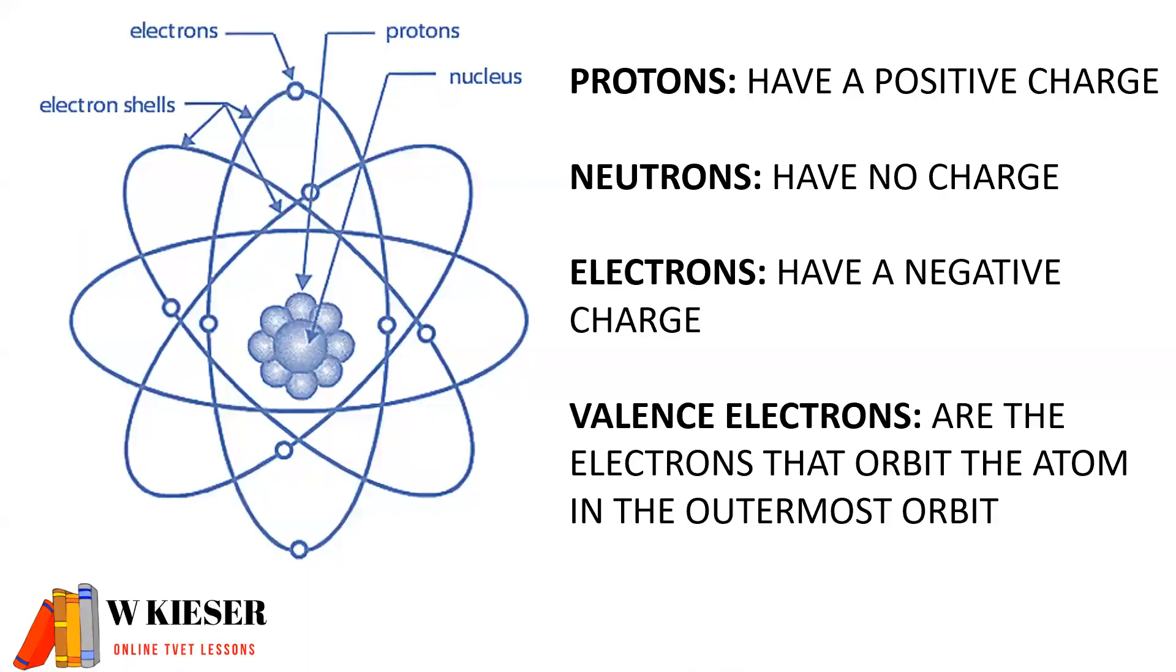For an atom, protons have a positive charge, neutrons have no charge, electrons a negative charge. Valence electrons are the electrons that orbit in the outermost orbit.